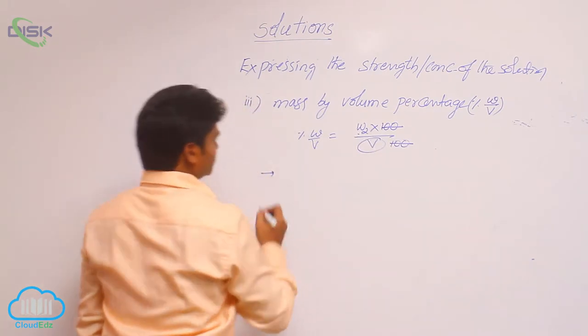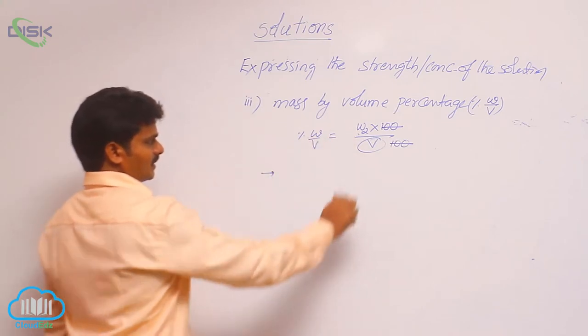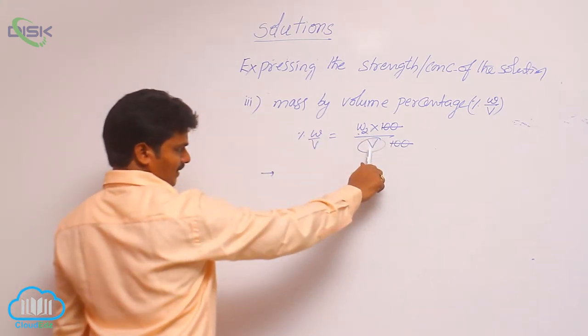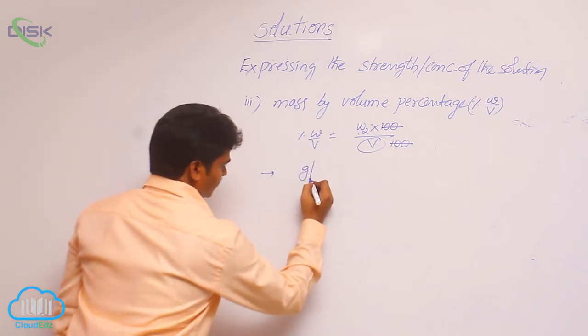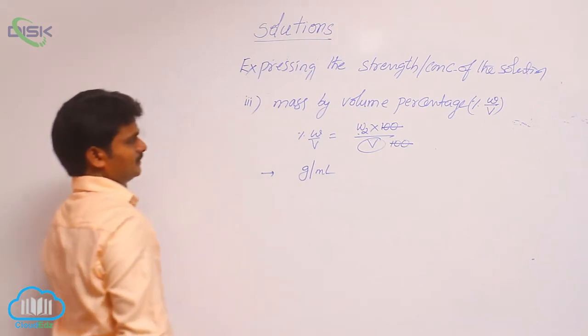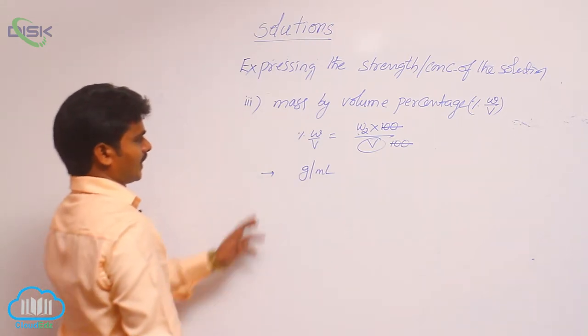Now here, what are the units? In the numerator, there is weight in the denominator of volume. That is why its units are gram per ml.